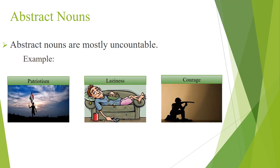Abstract nouns are mostly uncountable. For example, patriotism, laziness, courage.